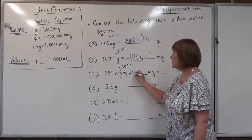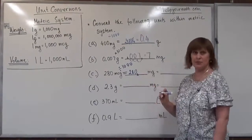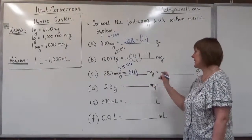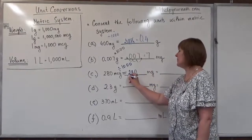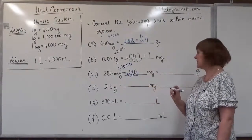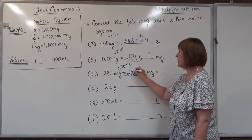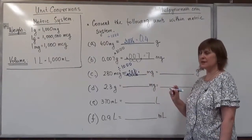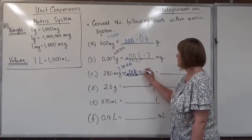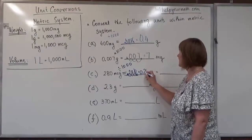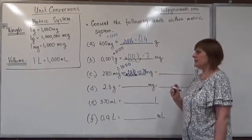We copy the number 280, drop the decimal point at the end of the whole number, and shift the decimal point three places to the left. Since we can drop the final zero, the result is 0.28 milligrams.